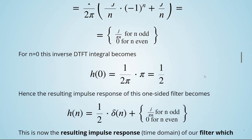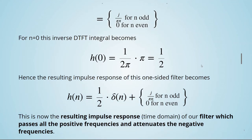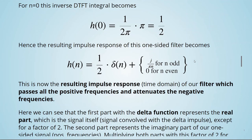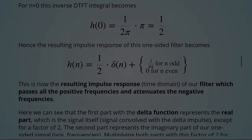Hence, the resulting impulse response of this one-sided filter becomes 1 divided by 2 times delta n plus j divided by pi times n for n odd and 0 for n even. This is now the resulting impulse response, the time domain of our filter, which passes all the positive frequencies and attenuates the negative frequencies.